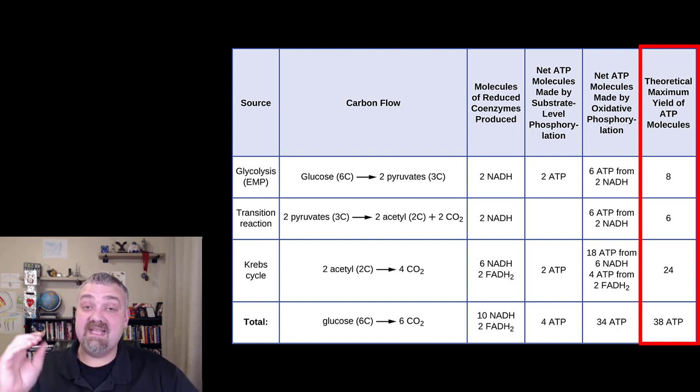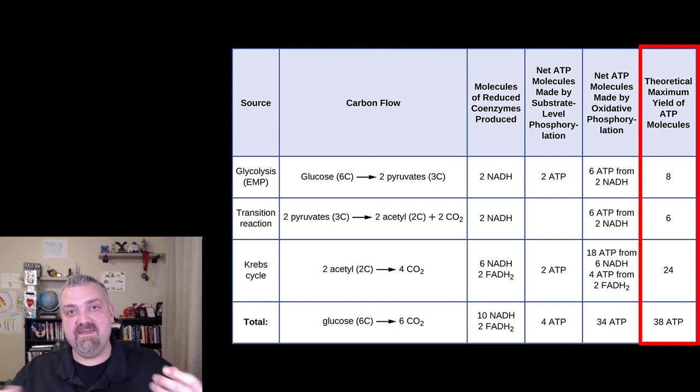So that's all the key players, and that's where the energy comes from in those four steps. Glycolysis, the intermediate step, the Krebs cycle, and then at the end, the electron transport system. I hope this helps. We'll dive deeper in other videos. Have a wonderful day. Be blessed.